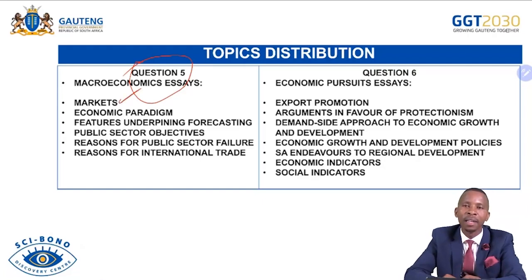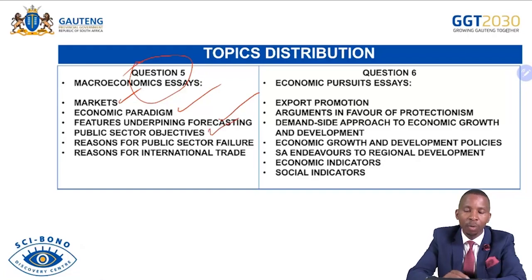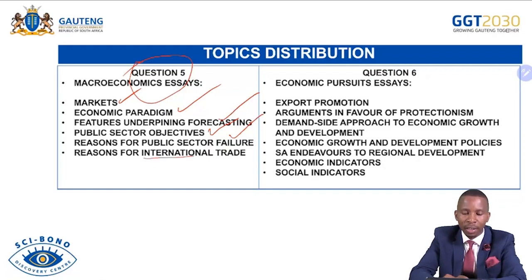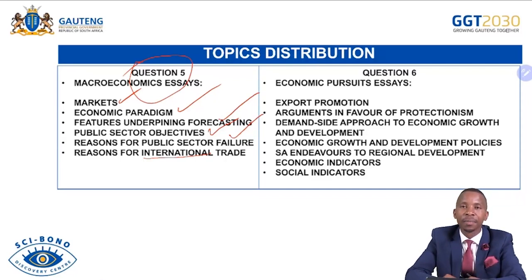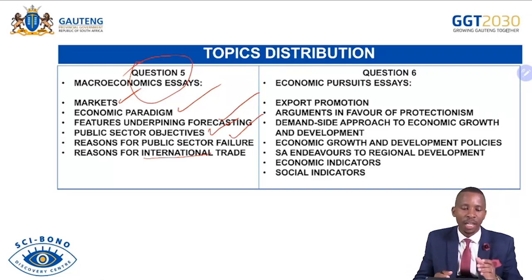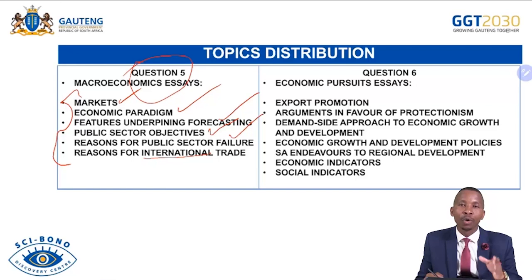The possible macroeconomics essays include: markets in the circular flow, economic paradigm or smoothing the business cycle, features and opinion forecasting under business cycles, public sector objectives, reasons for public sector failure, and reasons for foreign or international trade — differentiated into demand and supply reasons. If you want to answer Question 5, you must master these essays. Practice on each one to expand your opportunities.